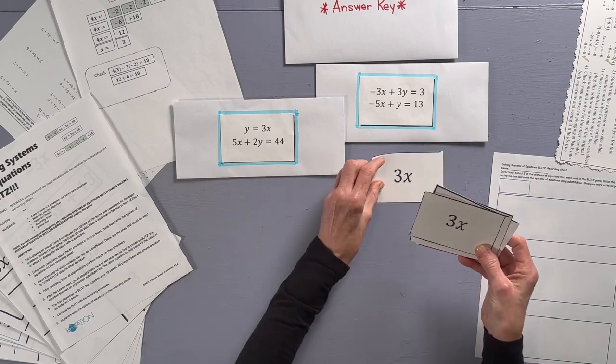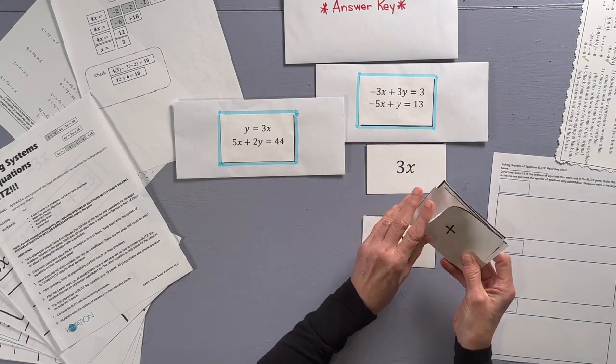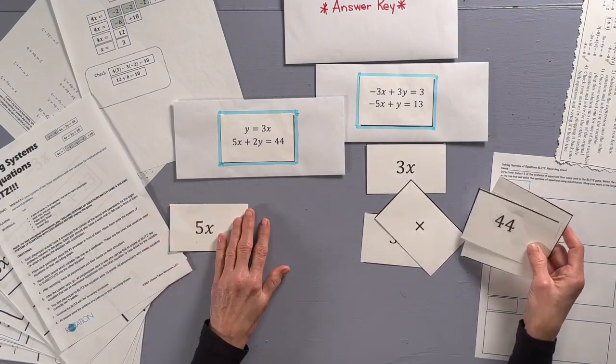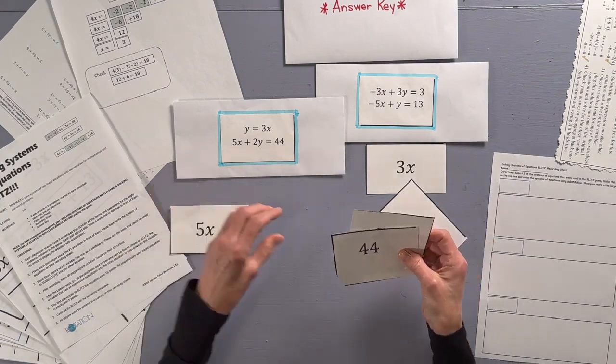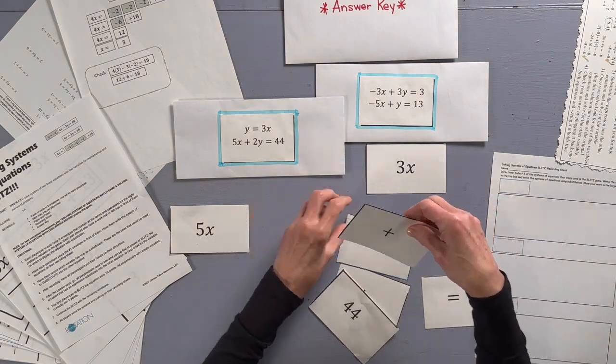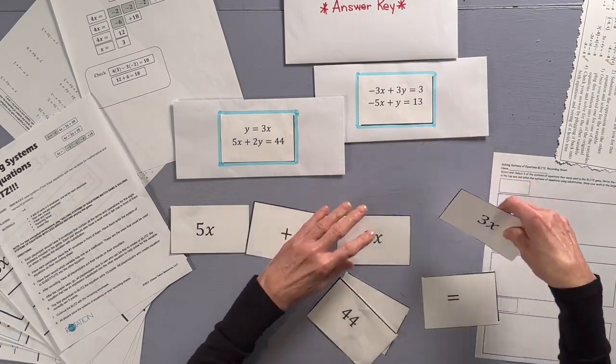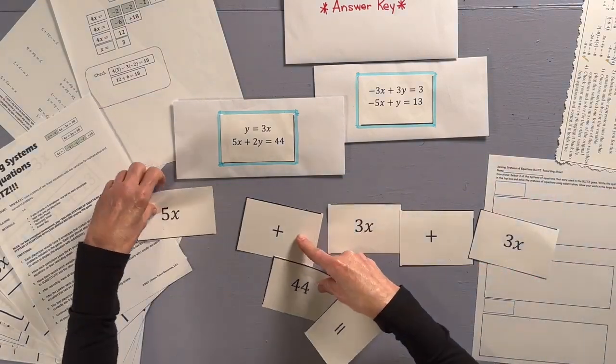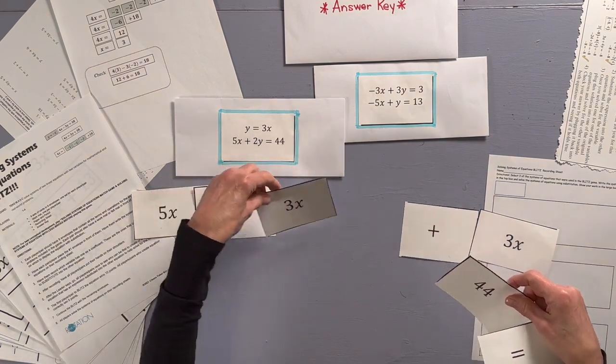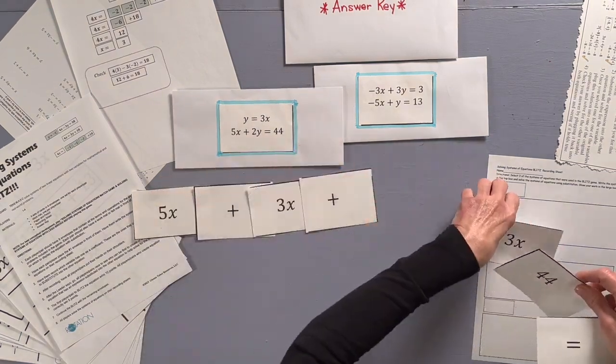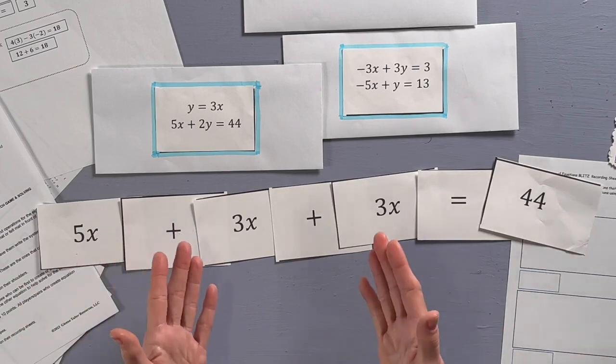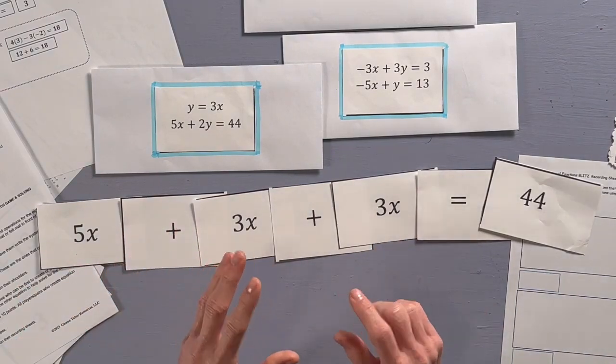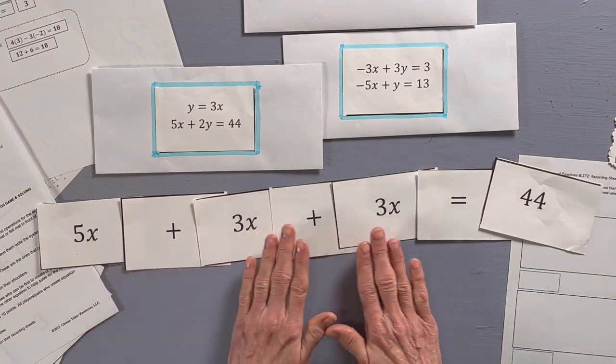So I know y is equal to 3x and this is 5x plus 2y and I know that y is equal to 3x so it's a plus 3x and a plus 3x and it equals. Now to provide for some much-needed movement, players stand when they believe they have correctly organized the cards.